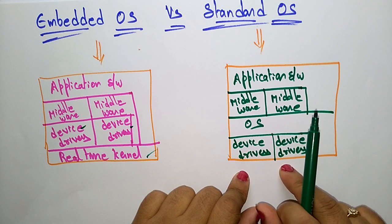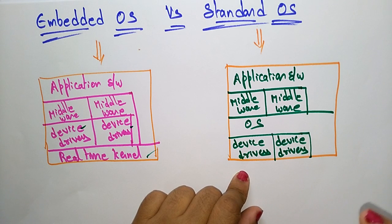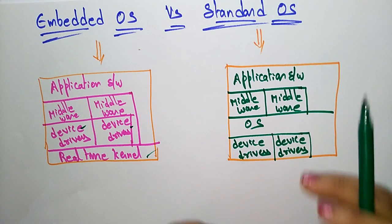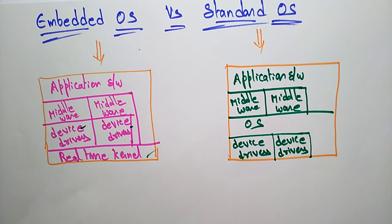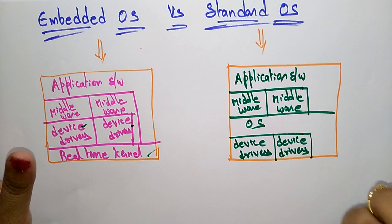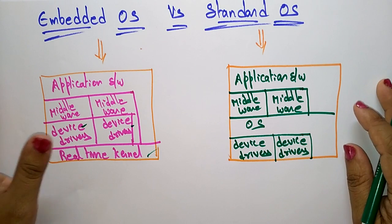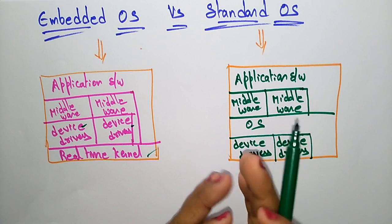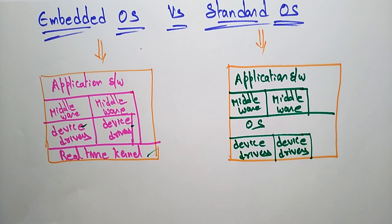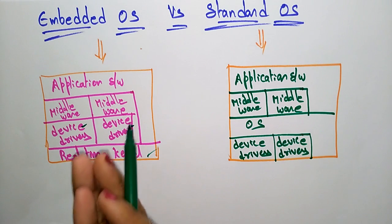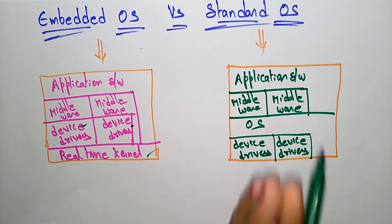In many cases, a standard operating system is used to compile software — compilation is normally done on standard operating systems. The operating system along with applications is bundled into a package to be downloaded onto an embedded application. These are the differences between embedded operating systems and standard operating systems.